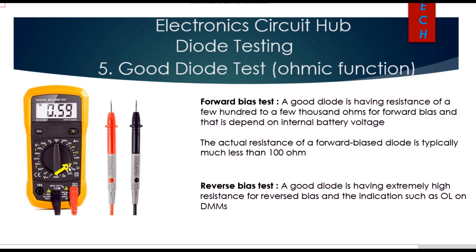Using the ohmic function, a good diode in forward bias will show a resistance of a few hundred to a few thousand ohms, depending on the internal battery voltage. However, the actual forward-bias resistance is typically much less than 100 ohms in practice.